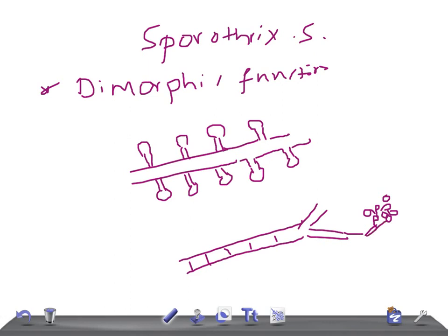Dimorphic - the environmental form on plant materials worldwide as hyphae with rosettes and sleeves of conidia. The tissue form is a cigar-shaped yeast in tissues. Environmental form, tissue form, and traumatic implantation as I said in the clinical history.